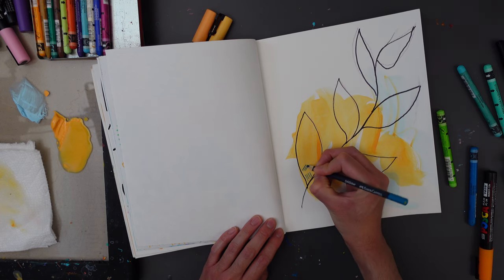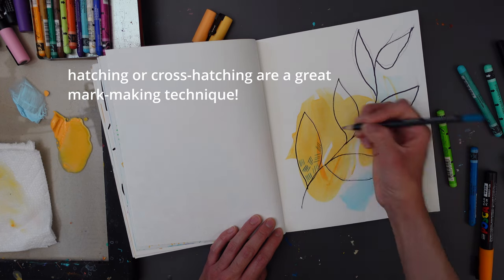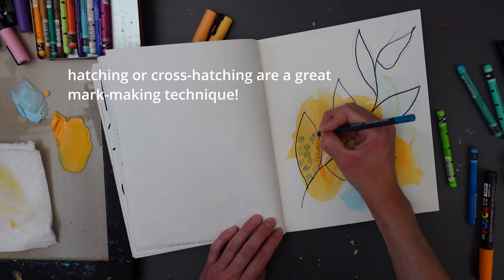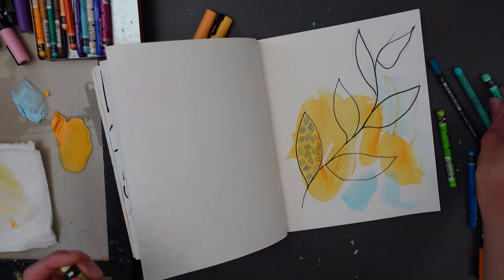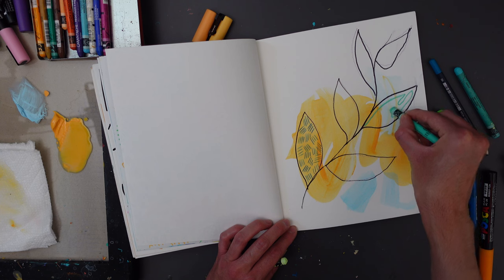So I'm going to start filling this leaf with some lines. A continuous line is also really fun and easy to add.